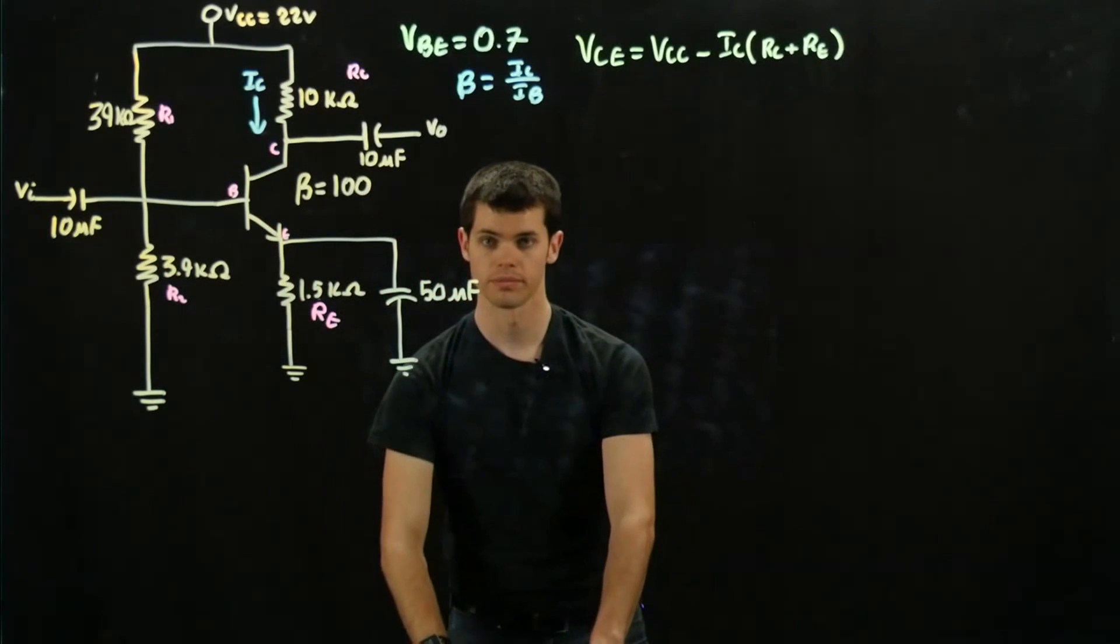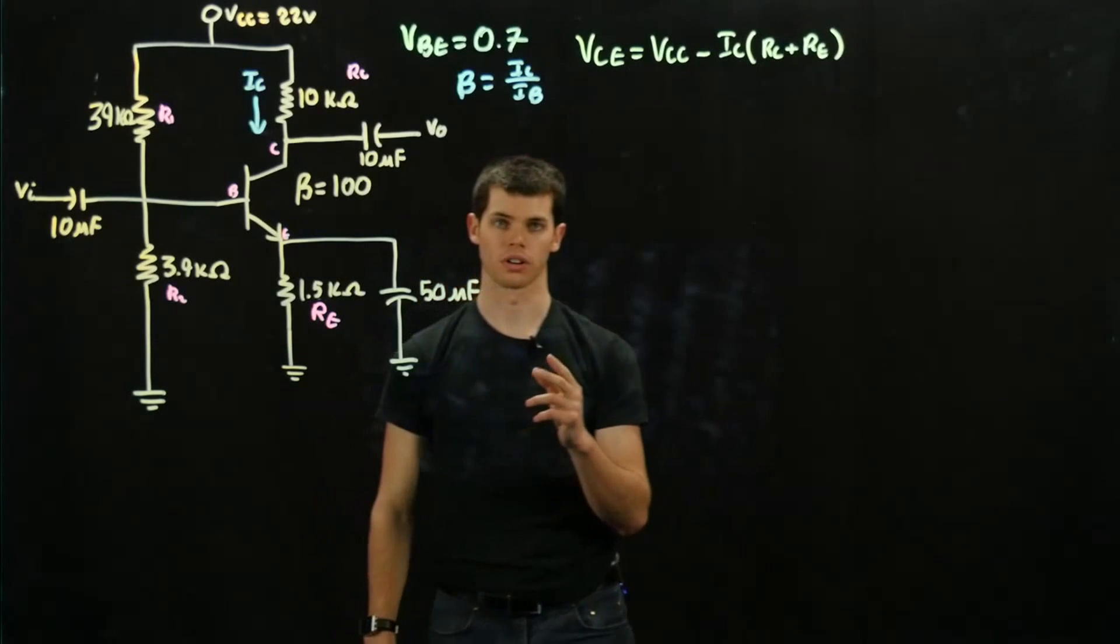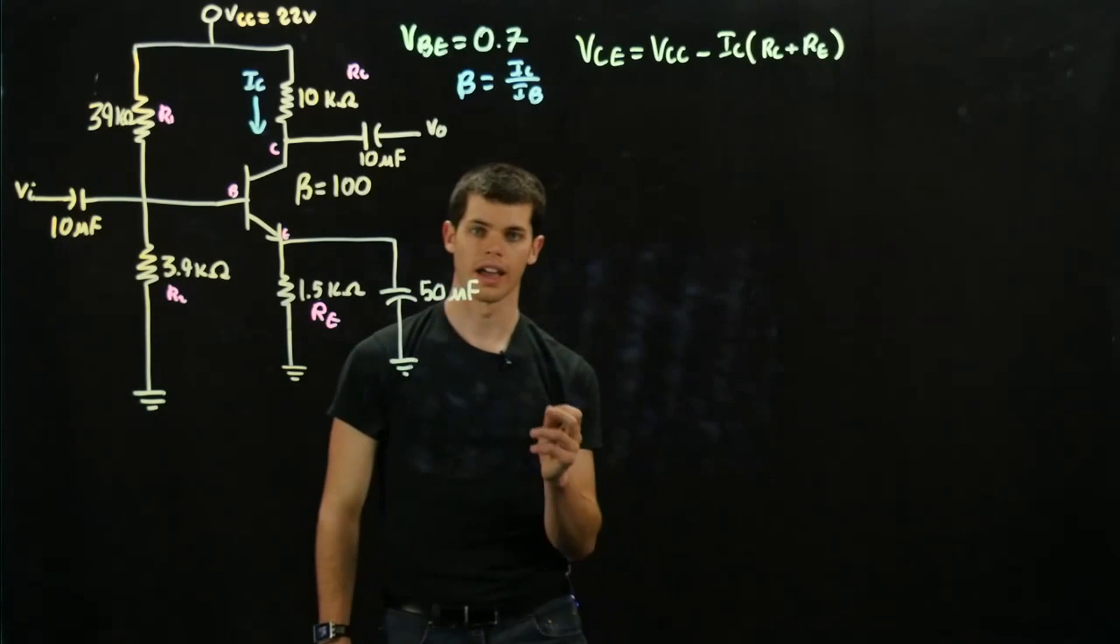Alright, now to start out, we're going to want to find two values. There are two important values: R-thevenin and E-thevenin.